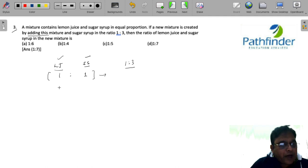So basically you have another mixture where the quantity of lemon juice is 0 and quantity of sugar syrup is 1. So you take 1 and 3.